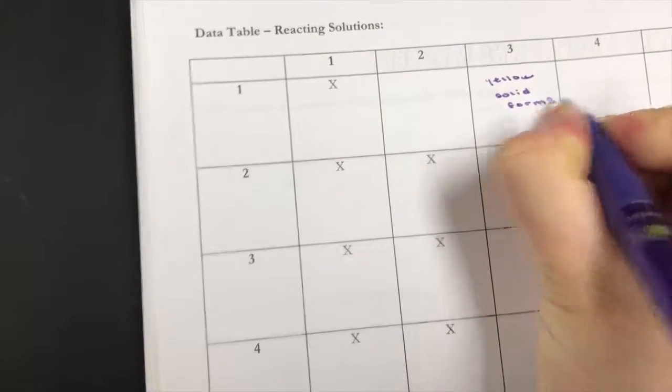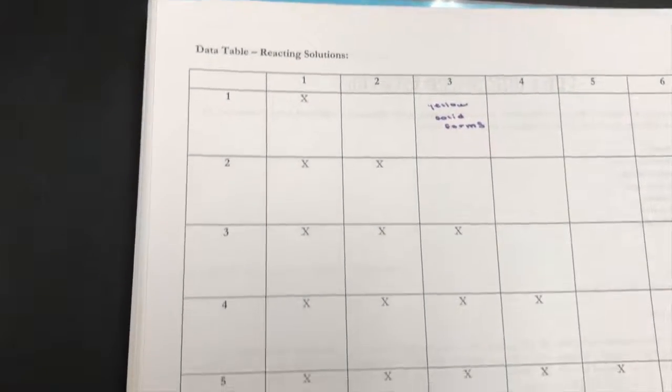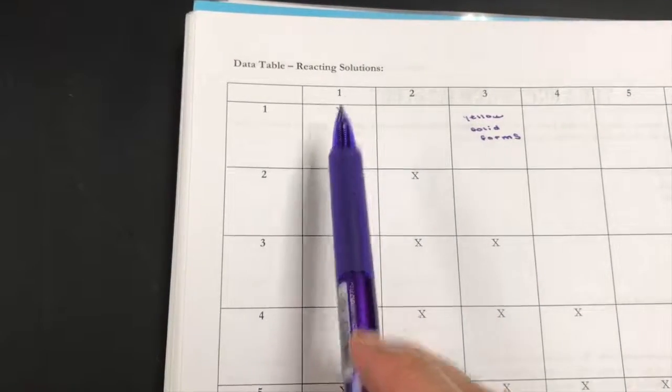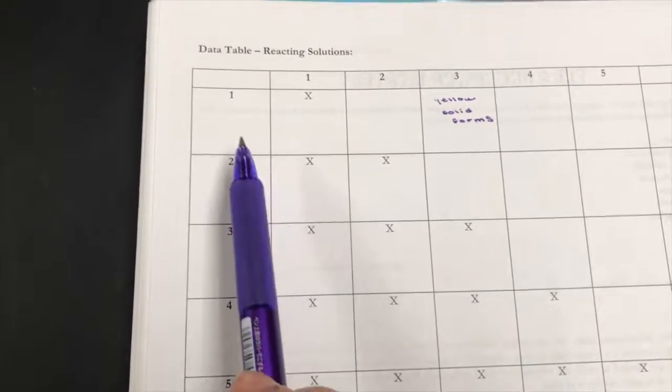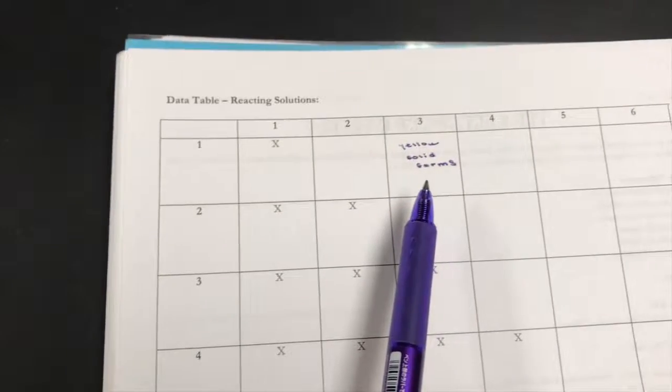Notice one and three here is crossed out. That's simply so that you're not doing the same thing twice, the same reaction twice.